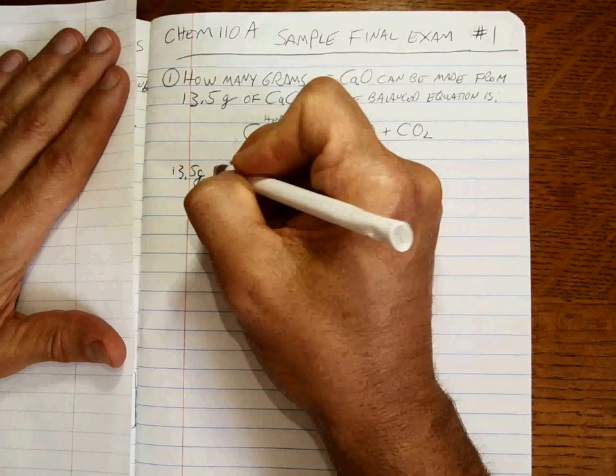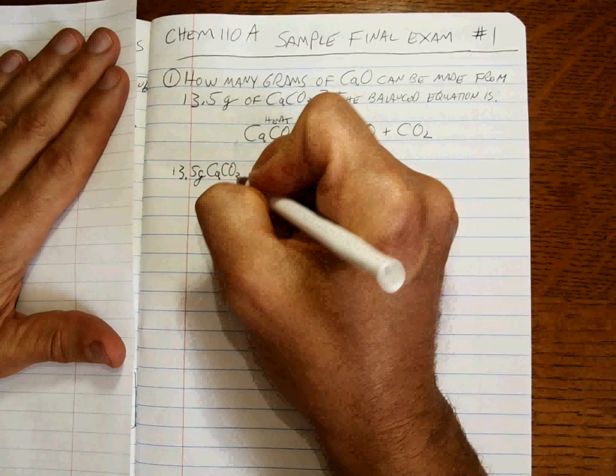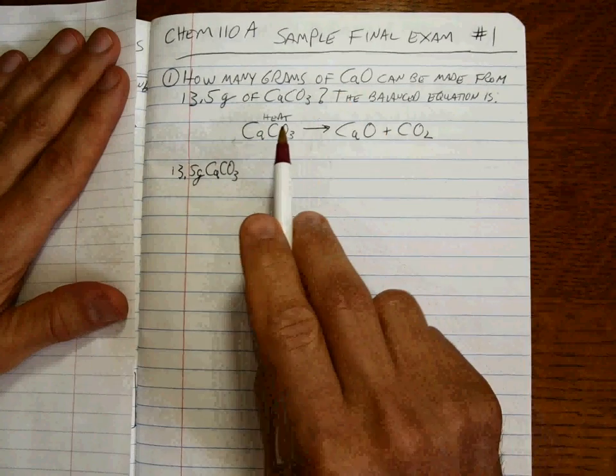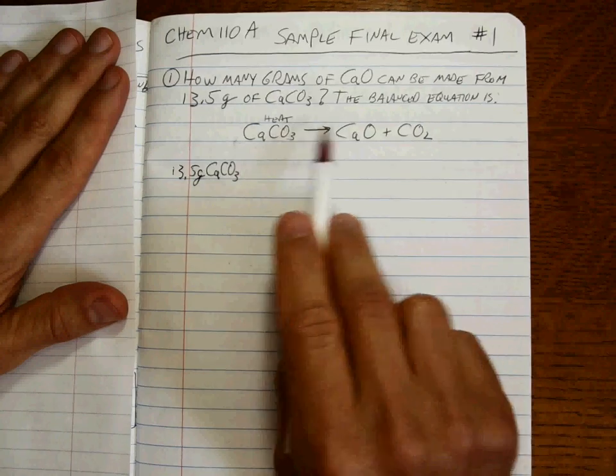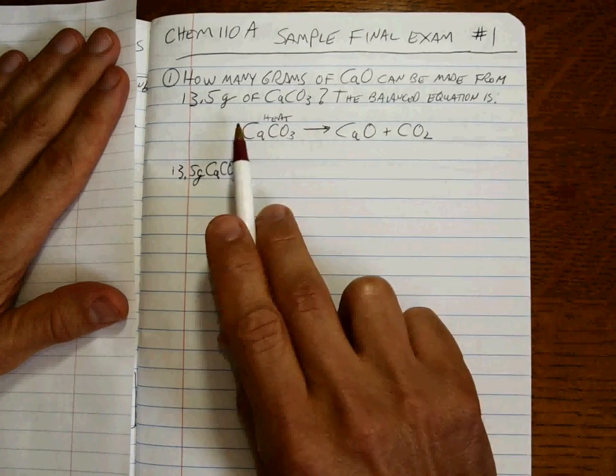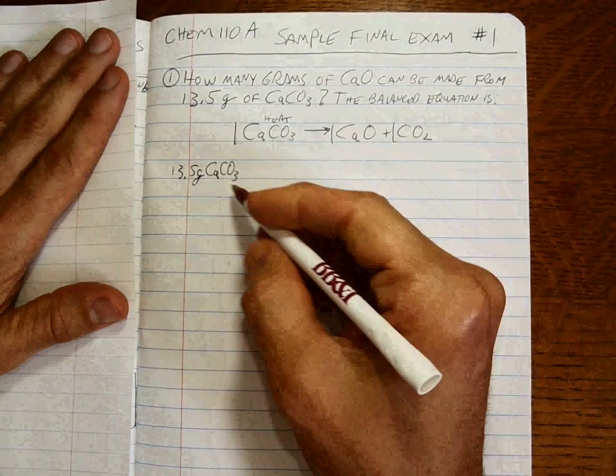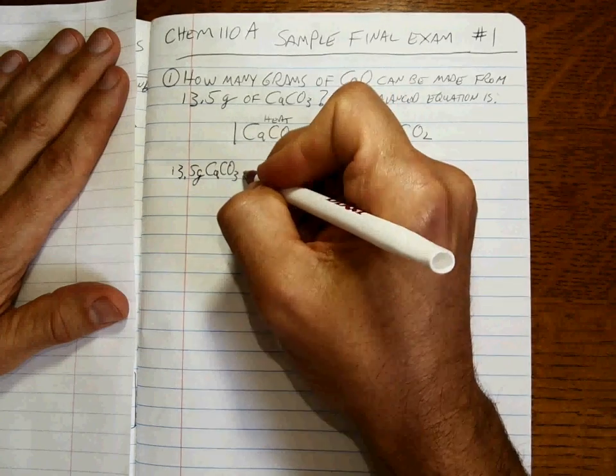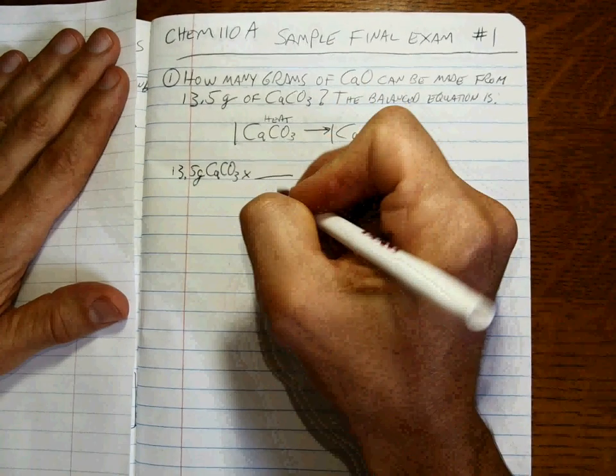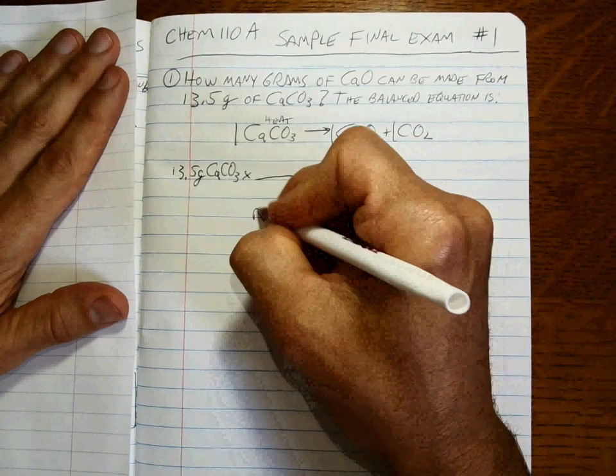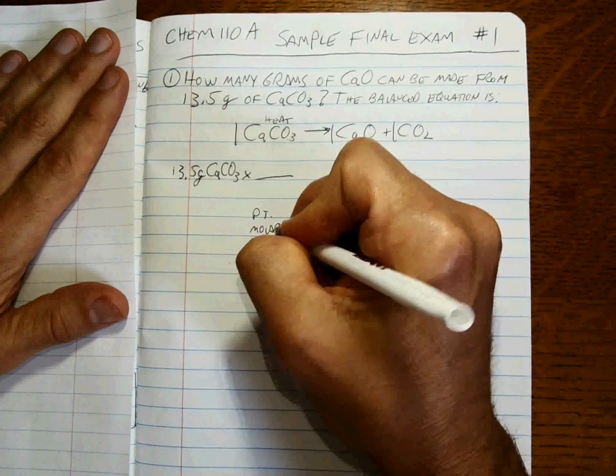We have one number in the problem, let's start with that. Label it both with our units and what it is. We want to compare the calcium carbonate to calcium oxide, and that's a mole to mole ratio, one to one. So we have to get to moles first. How do you get from grams to moles? You should know by now that's using the periodic table and the molar mass.